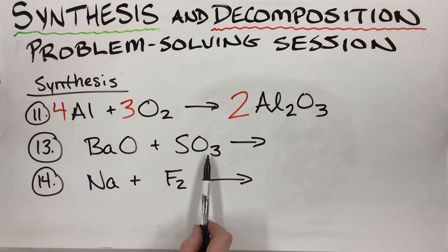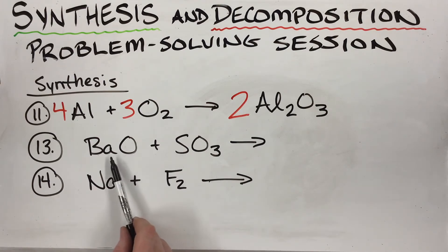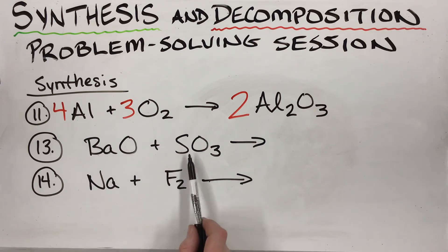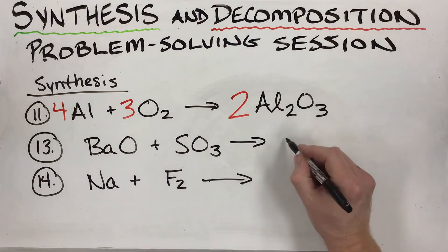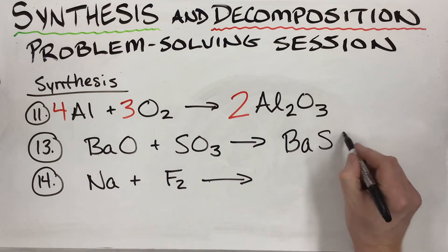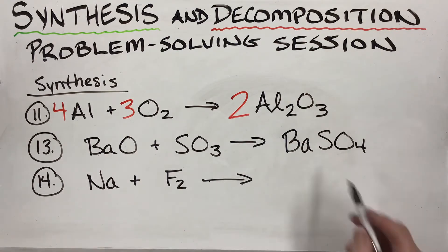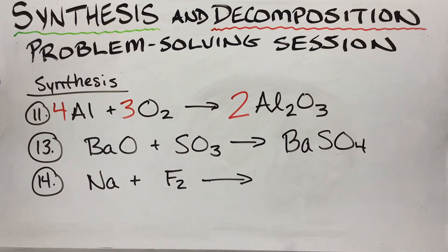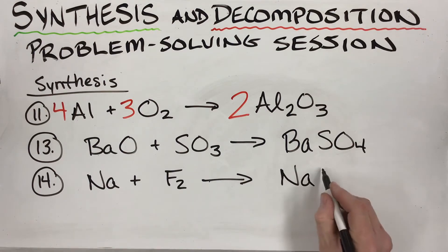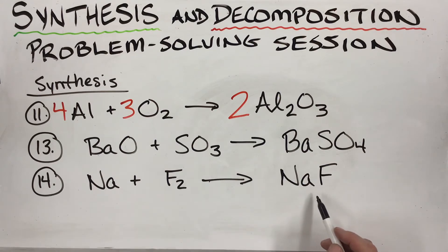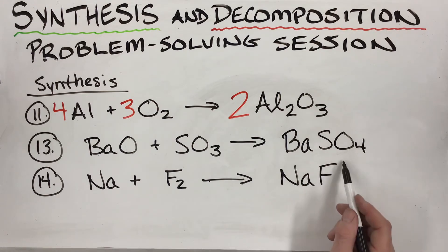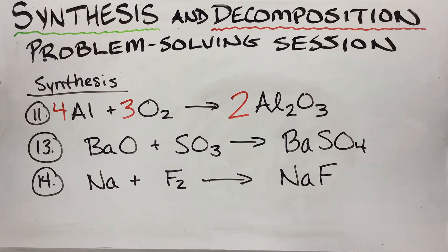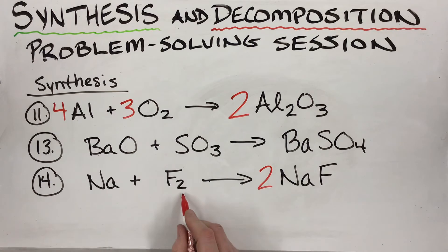Number 13: barium oxide and sulfur trioxide. Can't do double displacement — both end in oxygen. Combine them: metal Ba goes first, then add the oxygens. One O from BaO plus three O's from SO₃ gives four O's total — that's sulfate. Barium has a charge of two, sulfate has a charge of two; the twos cancel. Product is barium sulfate, BaSO₄.